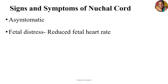What signs and symptoms can indicate a cord around the neck? Unfortunately, knuckle cords are very asymptomatic — they do not present with any signs and symptoms when they are beginning. But as it gets worse, you may have fetal distress, which mainly happens if there is now tightening and reduced supply of oxygen and nutrients to the child. We start detecting reduced fetal heart rates and reduced fetal movements.